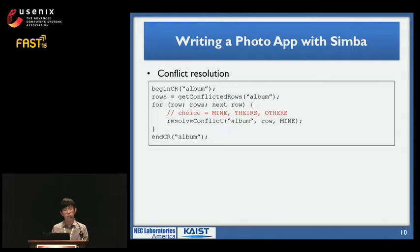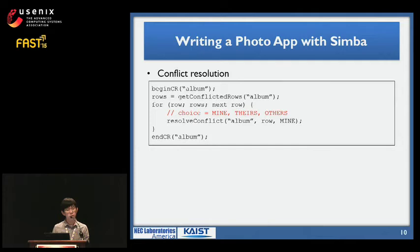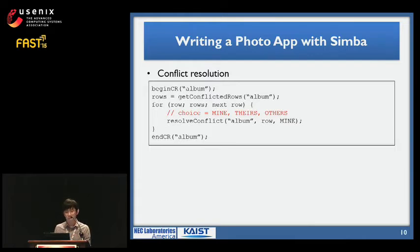For handling conflict resolutions, we call beginCR to lock the table, get the conflict rows by calling getConflictRows, and then resolve these conflicts by choosing my version, their version, or other ways such as revising at the time of conflict resolution. You can see this is pretty simple for any app developer to use.